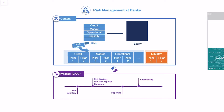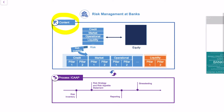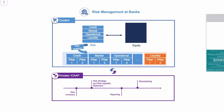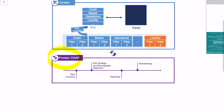In a lot of other videos, I've talked about how risk management actually works — what the theory or the content is behind risk management. This block is about that: risk management is all about balancing risk and equity, and the risk of the bank is made up of certain risk types, for instance credit risk, market risk, and so on. But of course there's also a process behind all this theory, and this is what ICAP is all about. I have all this theory, but I actually need to do stuff on a day-to-day basis — this is what ICAP is about.